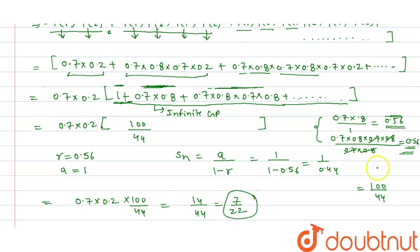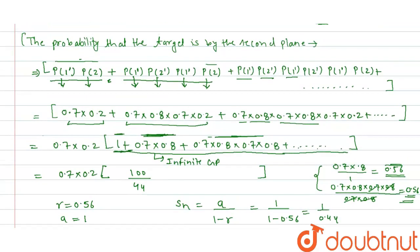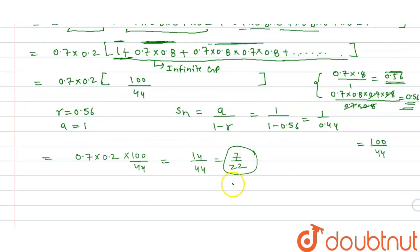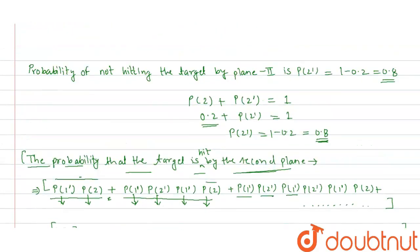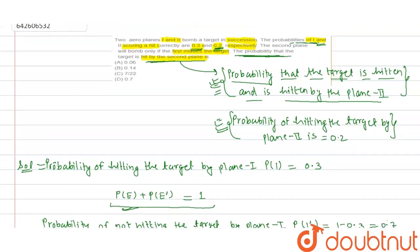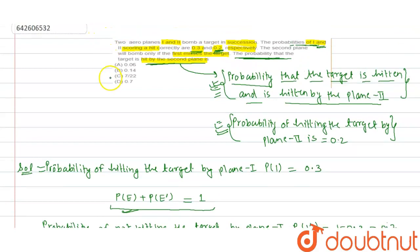So the probability that the target is hit by the second plane is 7/22. Checking the options, option C matches — 7 by 22. So C is my answer.